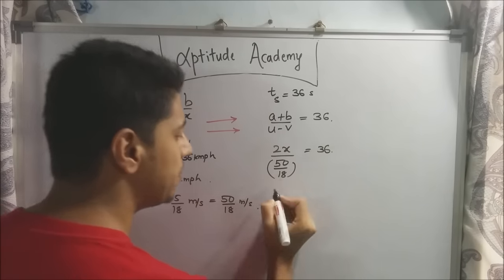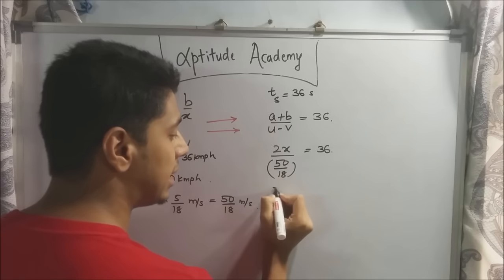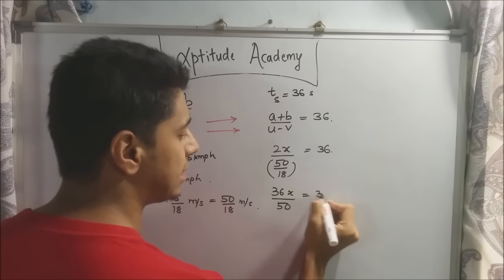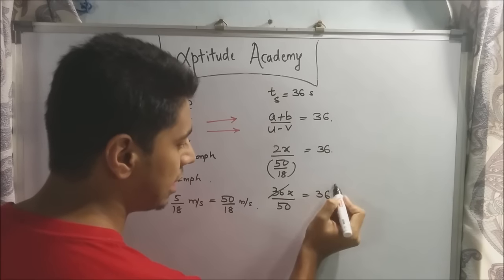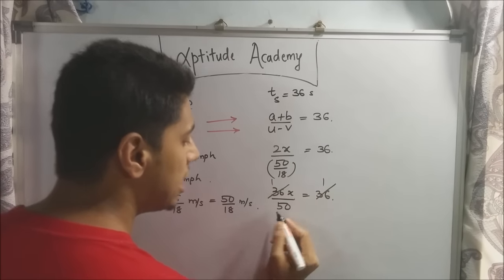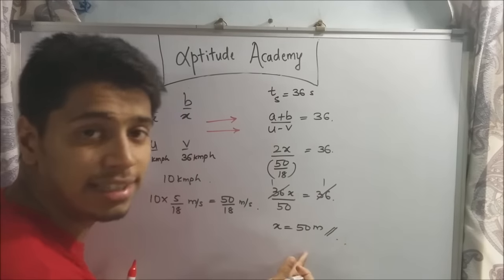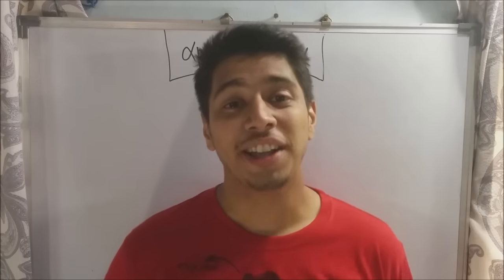Now, 18 will go on top. So, you will get 18 into 2X. So, that is 36X by 50 equals 36. So, 36 gets cancelled. You have 1, 1. So, X equals 50 meters. So, this is the length of the train. Alright.